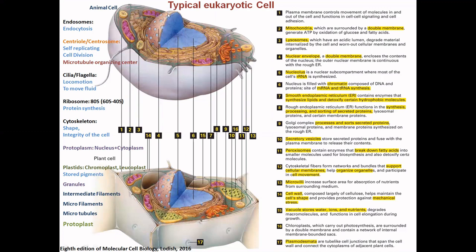Then there is the nuclear membrane or nuclear envelope, which is also a double-layer structure. It encloses the substances present inside the nucleus, and there are pores in it. The outer membrane of the nuclear envelope is continuous with the rough endoplasmic reticulum. The dark-stained structure inside is called the nucleolus — it is the place for ribosomal RNA synthesis. The entire structure enclosed by the nuclear envelope, including the nucleolus, is called the nucleus. When the nucleolus is suspended in cytoplasm without a nuclear membrane, it is called the nucleoid.